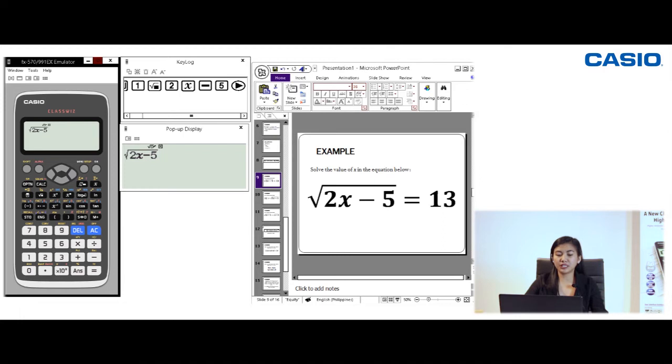And then here we will not press the equal sign at the bottom, but instead we are going to press alpha and then calc. Then press 13. Then for us to see what is the value of x in the given radical equation, we will press shift and then calc. So we have here 87. So that means for this radical equation to become true, the value of x must be 87.